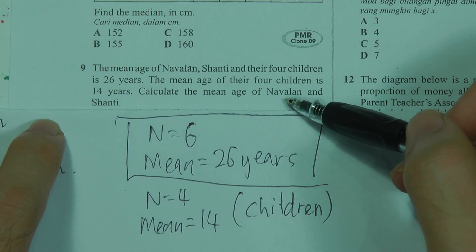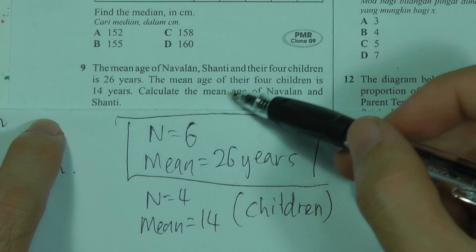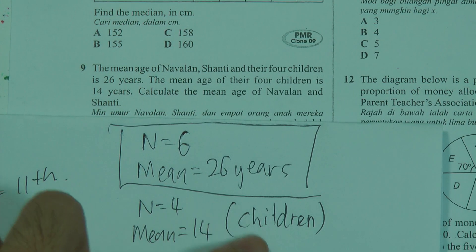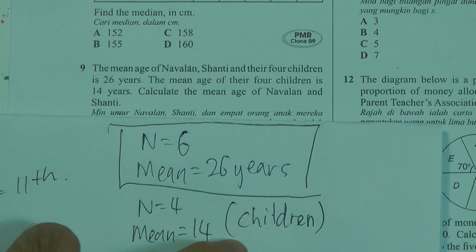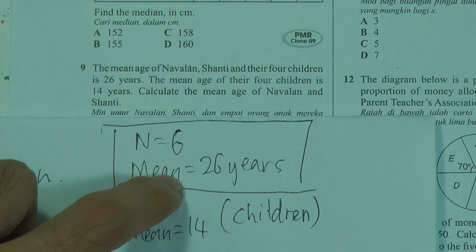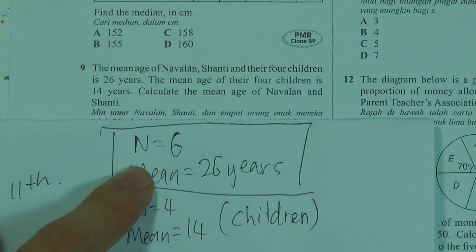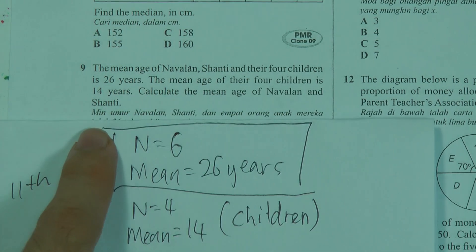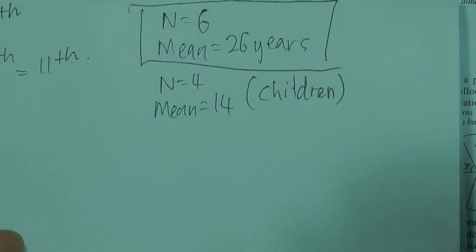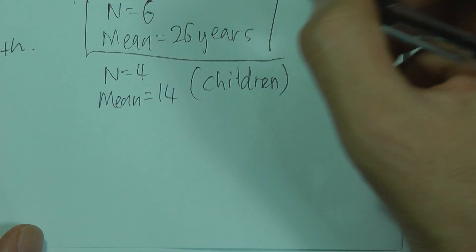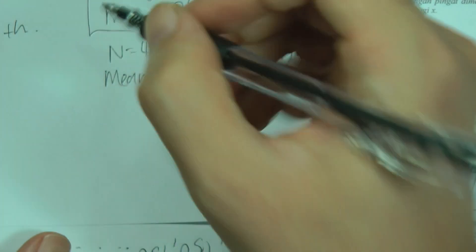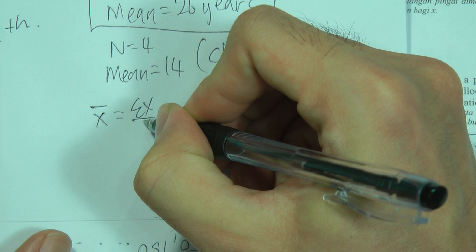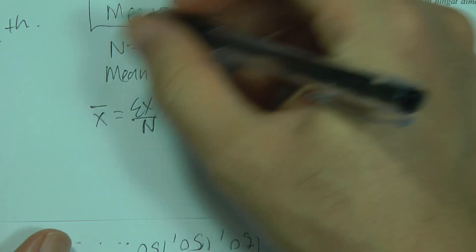To find the mean age for the two parents, calculate the total age for the four children and subtract from the total for all six people. Total for four children: 14 × 4 = 56 years. Total for six people: 26 × 6 = 156 years.